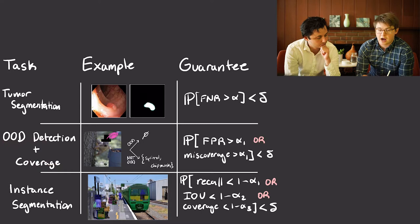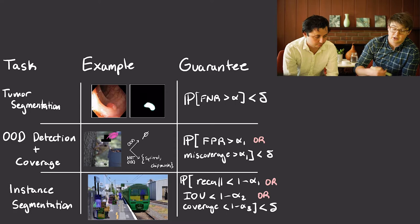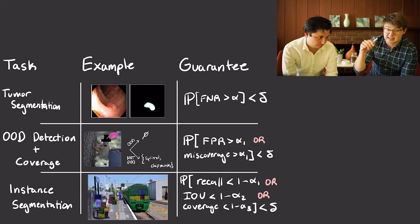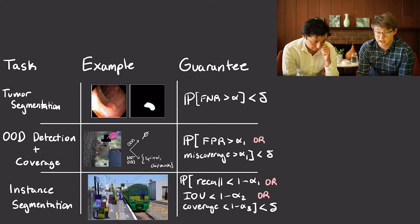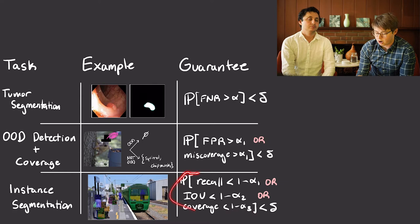For OOD detection and coverage, I now have two error rates. I want the probability that my false positive rate is too high, or that my miscoverage rate is too high, to be below delta. Unless I get unlucky — with probability less than delta — I'm going to have an algorithm with the right false positive rate and the right miscoverage rate. For the instance segmentation example, the most complex one, we had three error rates: controlling the recall (the fraction of true objects I failed to detect), controlling the intersection over union distance of the segmentation masks, and controlling the coverage so prediction sets contain the true class with probability at least 90%.